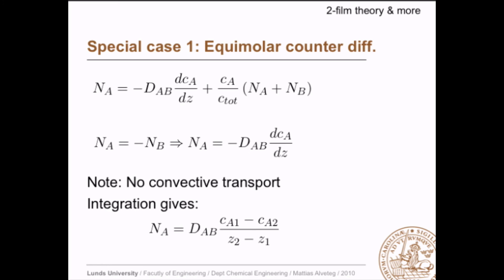For equimolar counter diffusion, we take the general equation and realize that N_A equals minus N_B. So the convective term simply vanishes and we are left with only the diffusive part. There is no convective transport, and integrating gives us the molar mass transport of A equal to the diffusivity times the concentration difference divided by the distance difference. We assume steady state, so the concentration gradient does not change in time.